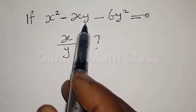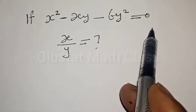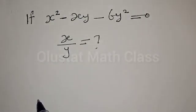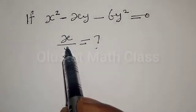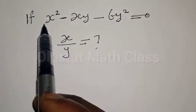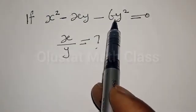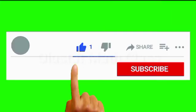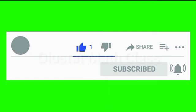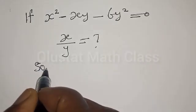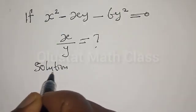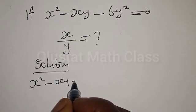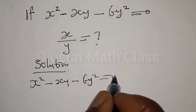If x squared minus xy minus 6y squared is equal to zero, x over y is equal to what? Hi everyone, welcome to my class. In today's class we want to look at how to find the value of x over y from this given equation. Before I proceed, please don't forget to like, share, comment and subscribe.